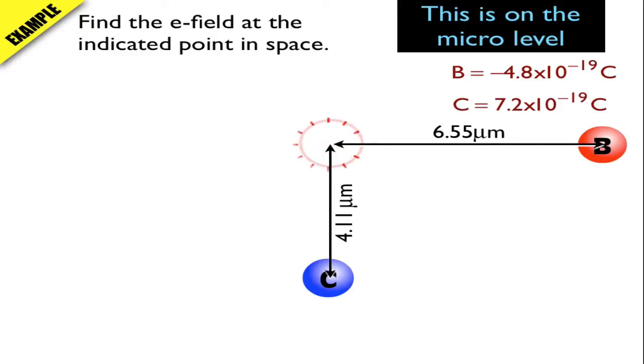I've got charge B, which is negative 4.8 times 10 to negative 19, and charge C, which is positive 7.2 times 10 to negative 19. They are 6.55 microns away and 4.11 microns down below.